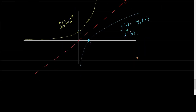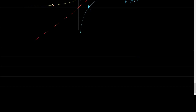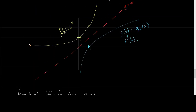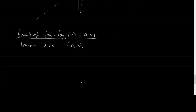Now let's look at general aspects of logarithmic graphs. For f of x equals log base a of x, with a strictly greater than 1: the domain is x greater than 0 — from 0 to infinity in interval notation. Notice that the horizontal asymptote of the exponential became a vertical asymptote here. We're never going to touch the line x equals 0, which is implied. The range is all real numbers, from negative infinity to positive infinity.